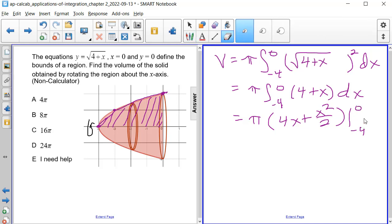Again, let's fix that negative 4 so that doesn't look like a 9. Alright, and if we substitute 0 in here, we are going to have 0 for both terms. And then we are going to subtract, well, 4 times negative 4 is negative 16. And then plus negative 4 squared is 16 over 2, which is 8.